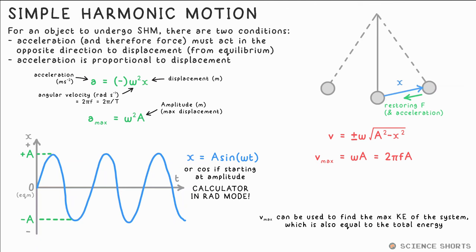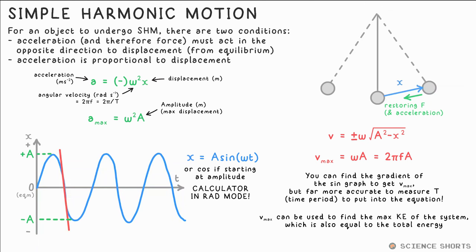This is an important equation because it allows us to find the maximum kinetic energy, if we use this speed in half mv². And the maximum kinetic energy is equal to the total energy of the system. Going back to our graph quickly, this is essentially distance against time, so if you're asked to find the maximum speed from it, you could draw a tangent at equilibrium, and you'll get the maximum gradient.